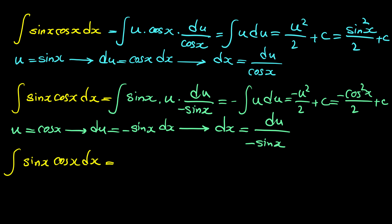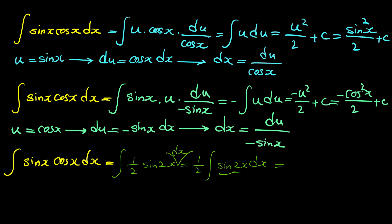This integral equals the integral of one half sine of 2x dx. We can move the one half outside, giving one half times the integral of sine of 2x dx. The integral of sine is negative cosine, so this equals one half times negative cosine of 2x plus C.